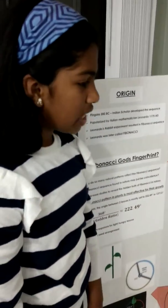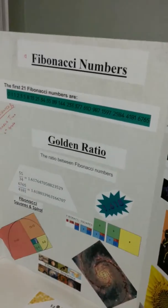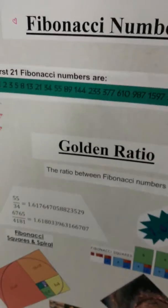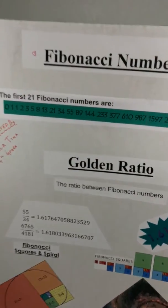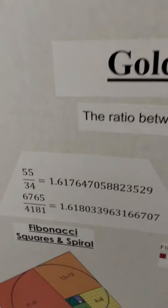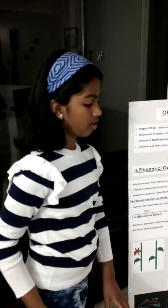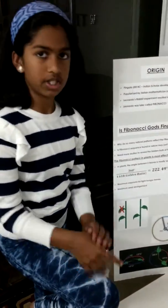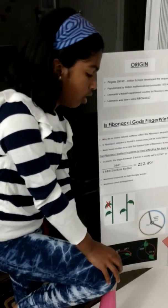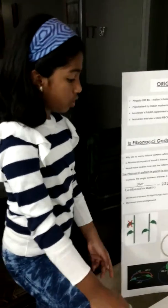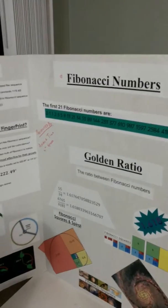Now I'm going to talk about the Golden Ratio. The Golden Ratio is 1.618. When you divide two Fibonacci Numbers that are close to each other, you get a number close to it. I divided 55 by 34 and got 1.617, which is really close to 1.618. Then I tried 6,765 divided by 4,181, which gave exactly 1.618. So as the numbers go bigger, you get closer to 1.618.